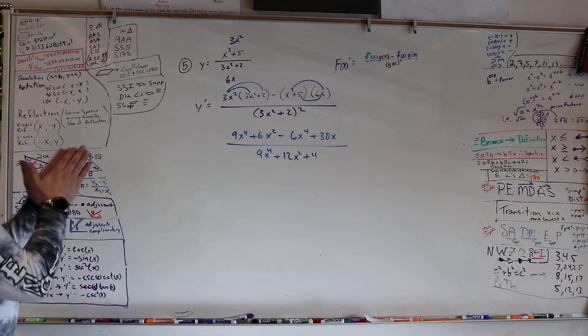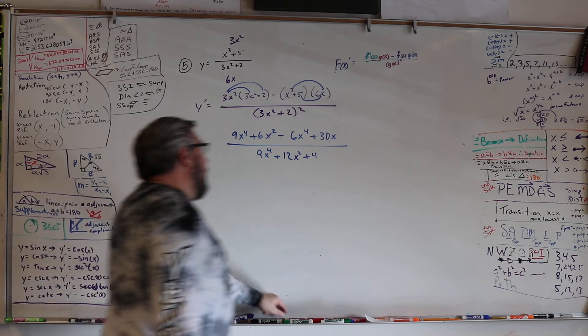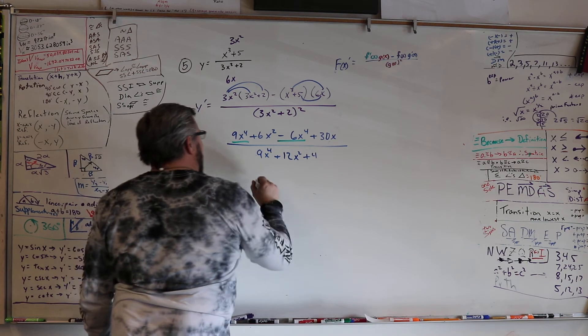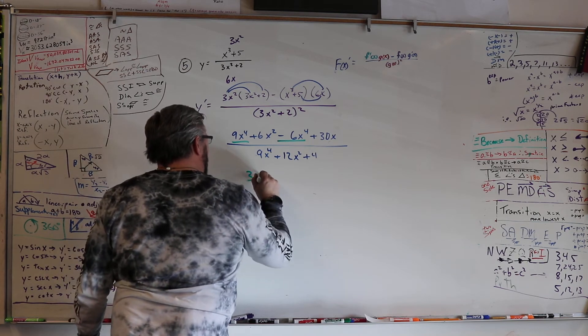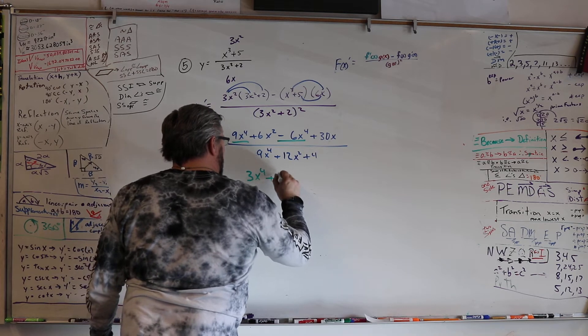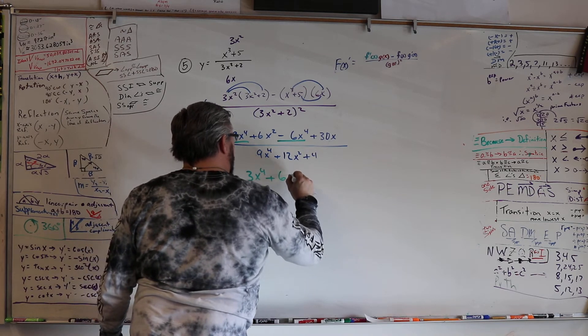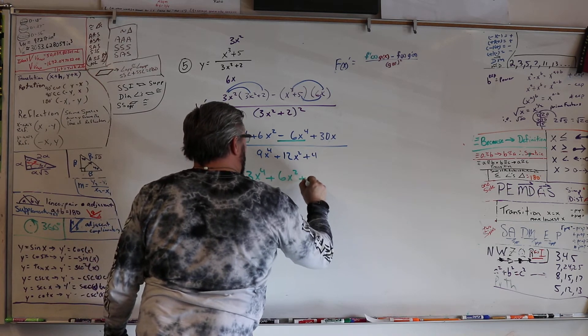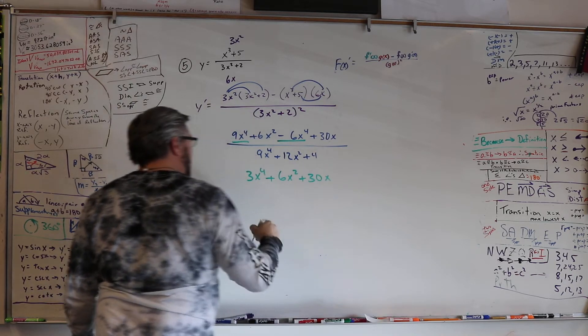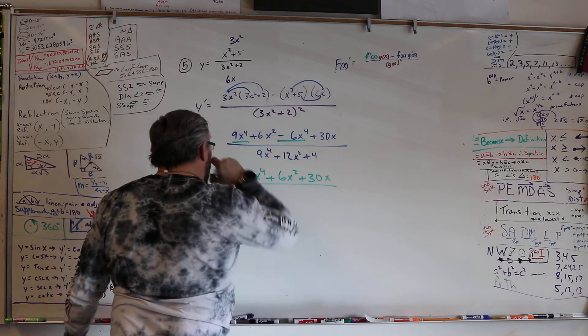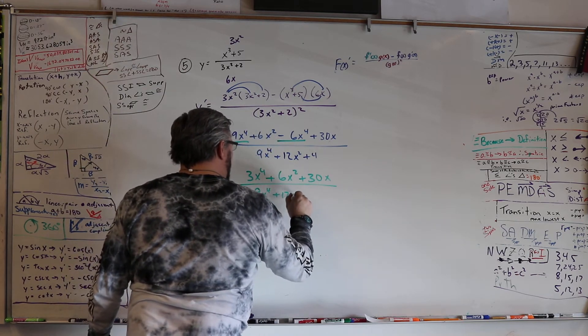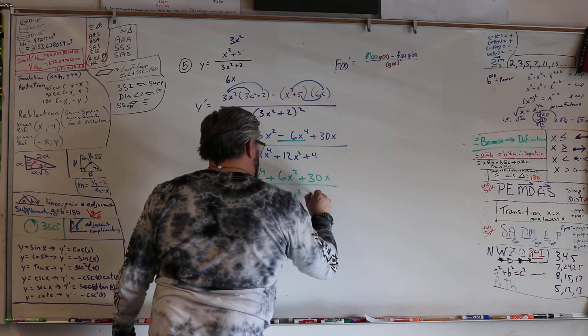All right. Now, collect some like terms. Well, I know this is like, and this is like. So, that would be 3x to the fourth, plus 6x squared, plus 30x. All over, 9x to the fourth, plus 12x squared, plus 4.